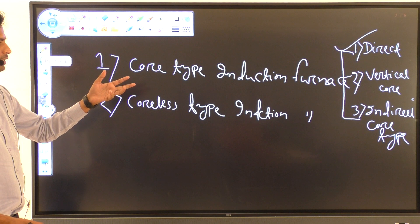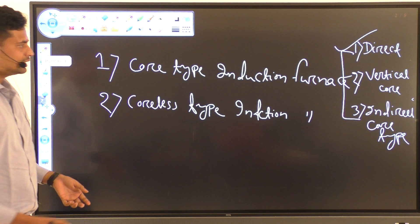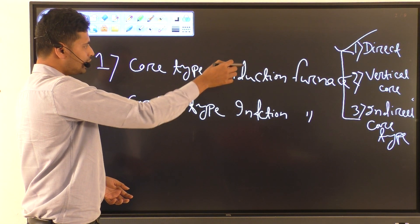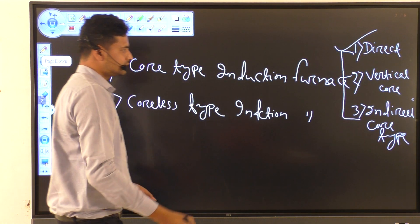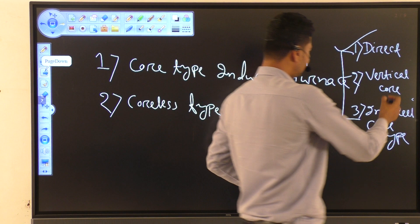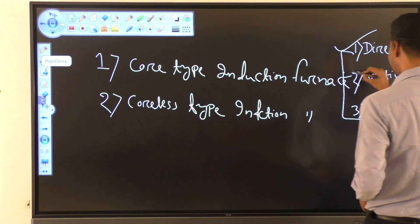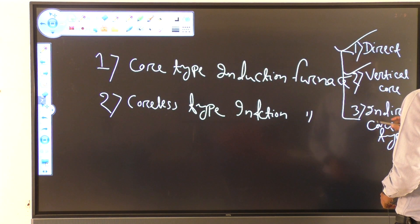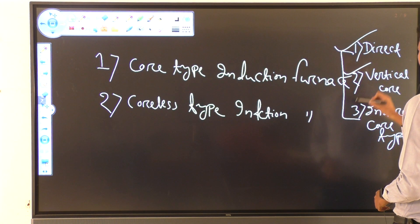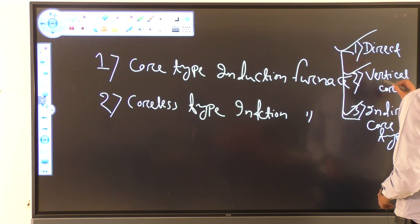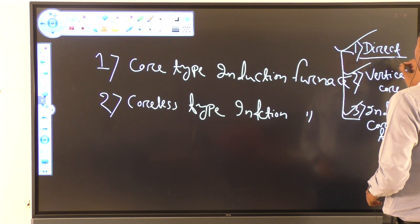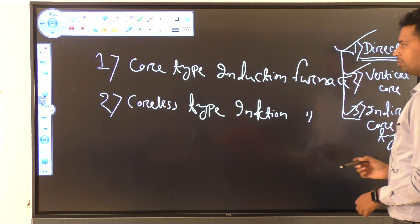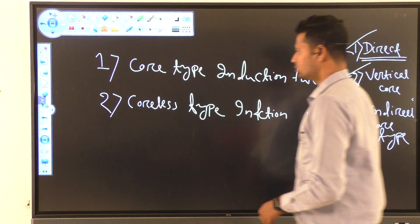The core type induction furnace has three subtypes: the direct core type induction furnace, the indirect core type induction furnace, and the vertical core type induction furnace. Let's first discuss the direct core type induction furnace.